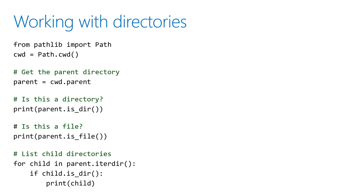In directories, another common thing — especially in data science when reading a set of files or moving data from one place to another — is we might need to go into a directory and get a list of its contents or files. We can keep using the Path library for that. We can request the parent directory, ask is this a directory or a file using is_dir (true/false) and is_file (true/false), and use 'for child in parent' to get a list of the contents of a particular directory.